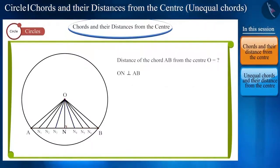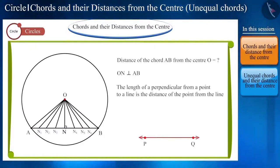Friends, in Mathematics, we define this shortest length ON as the distance between O and AB. So, now we can say that the length of a perpendicular drawn from a point on a line is the distance of that point from the line.